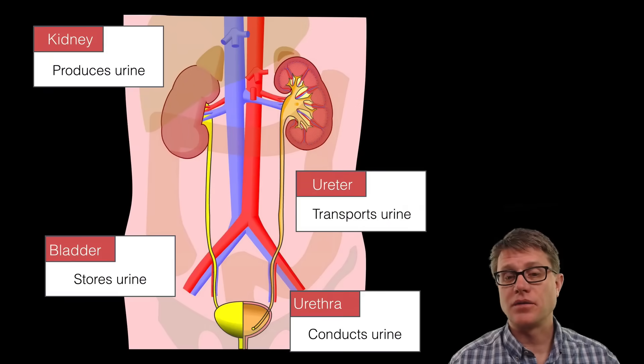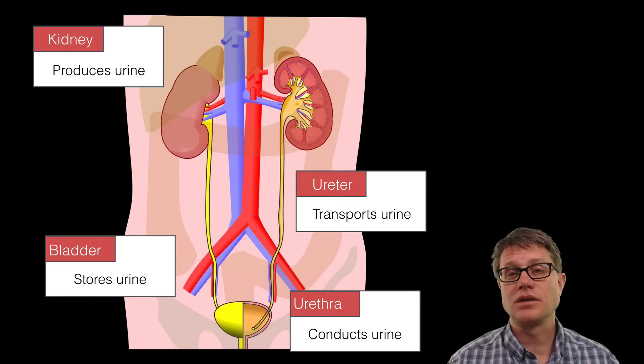All of that waste that comes out of the nephron empties out eventually into the pelvis, into the ureter, and is stored in the bladder itself. From there we can eventually conduct that to the environment. That's how the urinary system works.